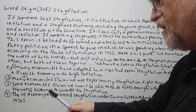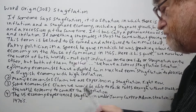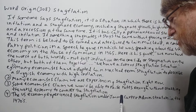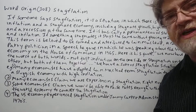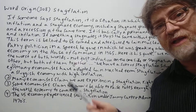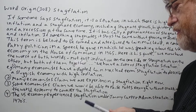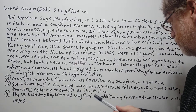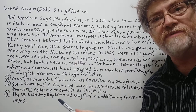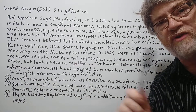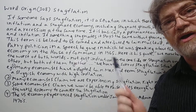Number four: The US economy experienced stagflation under the Jimmy Carter administration in the 1970s. It was finally when Reagan took office that they were able to fix it and deal with it, and then of course the economy started coming back under Reagan.